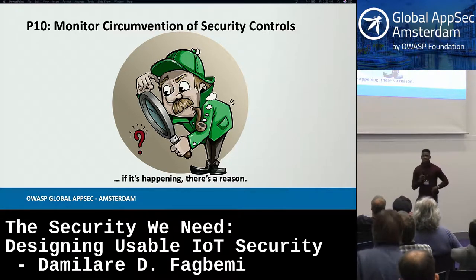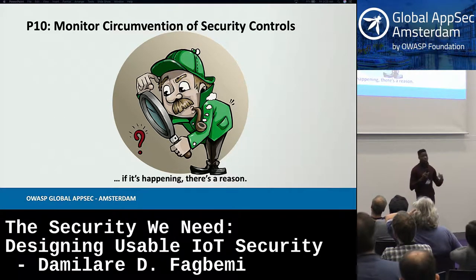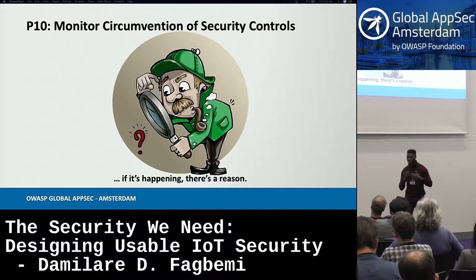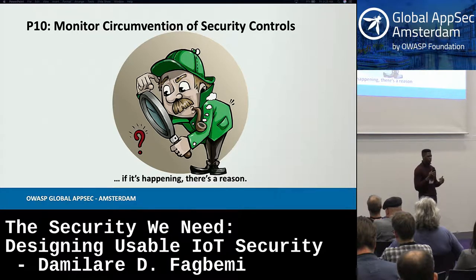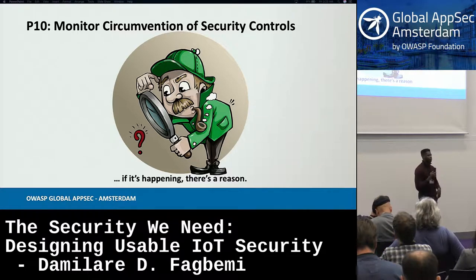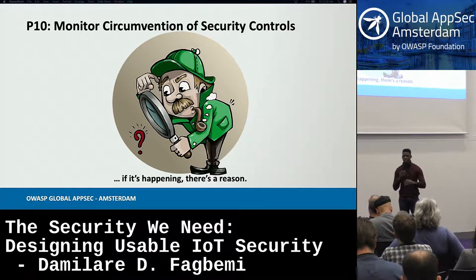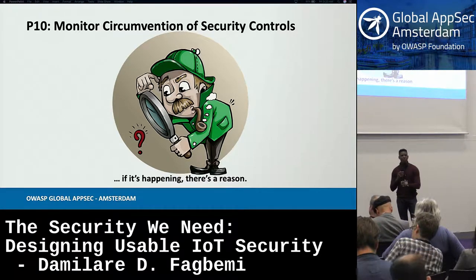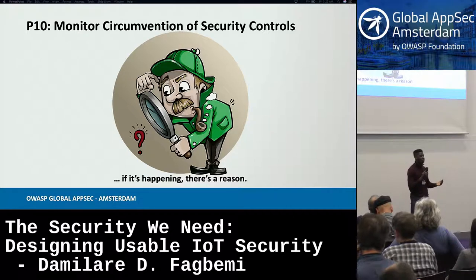The tenth principle speaks to circumvention of security controls. Research by Koppel and Smith speaks to the systematic circumvention of security controls by users. We often measure how our products and features are used — the question becomes: what about how they are misused? In an IoT scenario, if we're sending updates to an IoT device and they're not being applied, why? If users will systematically circumvent security controls, how do we use that to improve security controls rather than waste the opportunity?